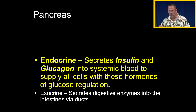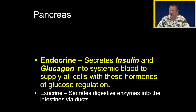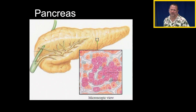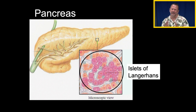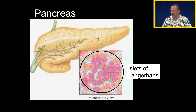As part of the endocrine system, the pancreas secretes insulin and glucagon into the systemic blood supply, supplying all the cells with hormones of glucose regulation. Your endothelial lining inside your arteries does not require these hormones to regulate glucose, nor does your brain. But all other cells require insulin and glucagon to regulate blood glucose. Here's a cartoon of a pancreas, and on a microscopic slide we'll see these little islands called islets — from the islets of Langerhans.